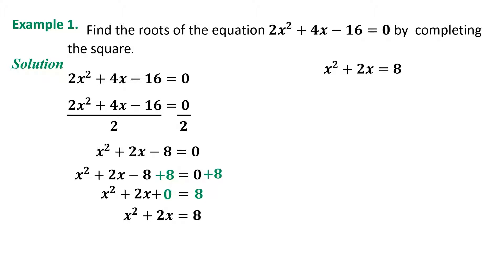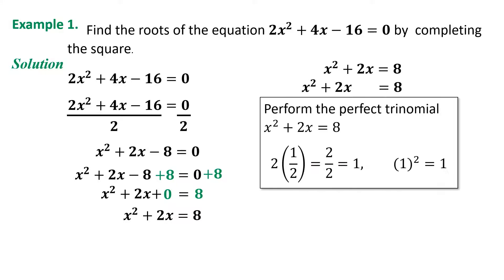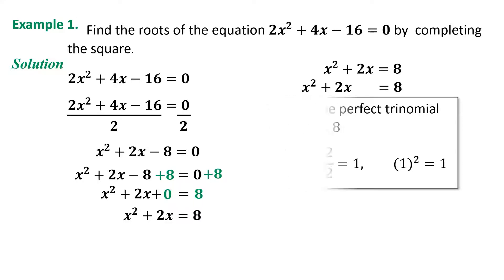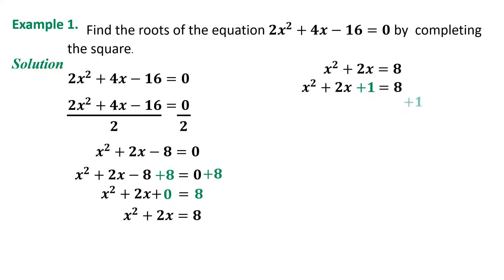We will proceed to perform the perfect square trinomial — we will find the third term of the equation. Try to study or review the prerequisite topics and visit the video links in the description box for the step-by-step process. The third term is positive 1. We will now add +1 on both sides of the equation. The equation is now x² + 2x + 1 = 9.